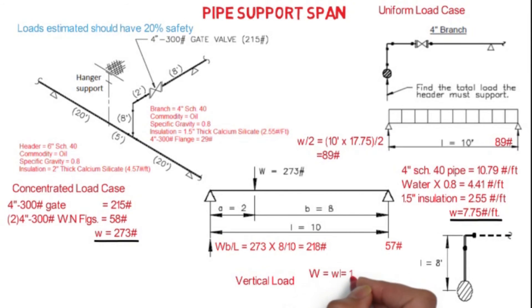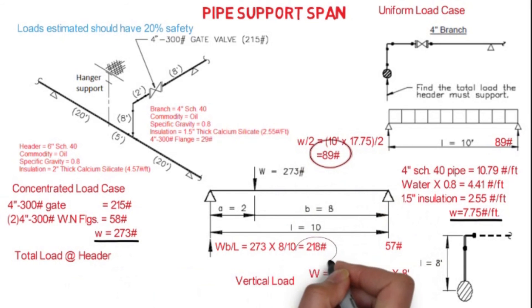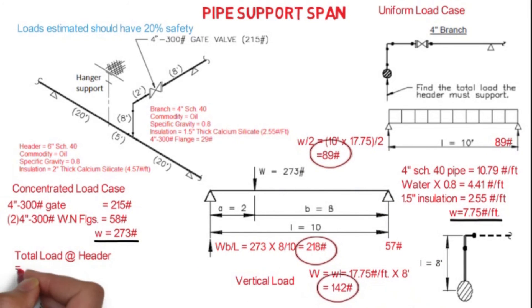Similarly, for vertical leg also, we have to calculate the load where we have the span of 8 feet. So here we have the total load is 142 pounds. So the total load of the branch on the header will be 449 pounds, where we have to add 89 pounds of the horizontal pipe load, 218 of the concentrated load of the valve, and 142 pounds of the vertical pipe.